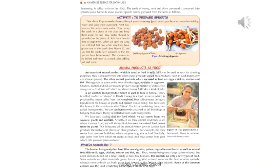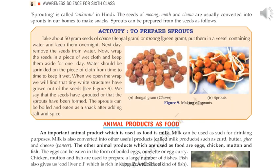Open page 6 and come to the topic 'Animal Products as Food.' An important animal product which is used as food is milk. Animals like cow and buffalo give us milk. Goat and camel are two other animals which also give us milk.